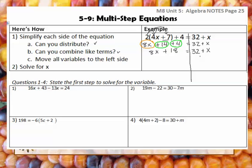Now I need to get my letters to the left. I have an x on the right-hand side that I need to move. I'm going to move the whole term, so I need to subtract x from both sides — make sure you line it up with your x term. 8x minus x gives me 7x, because remember this is a 1. So 7x plus 18 is equal to 32, and now this is just like a regular two-step equation.